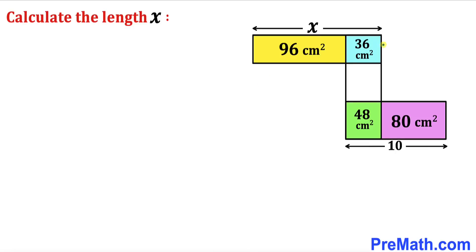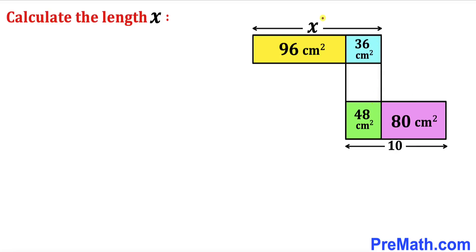Welcome to pre-math. In this video we have a bunch of rectangles put together, as you can see in this diagram, such that the area of the yellow rectangle is 96 cm², the blue rectangle is 36 cm², the green rectangle is 48 cm², and the purple rectangle is 80 cm². The lower horizontal distance is 10 cm, none of these boxes is a square, and our task is to calculate the horizontal distance x.